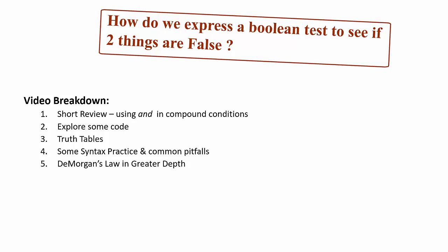Then we're going to explore ways to write code that provides a Boolean test for two things being false. You might be surprised by what code does work versus what doesn't work. Once we've run some experiments, we'll look at truth tables that explain why certain things work. After we understand the reasoning, we'll look at syntax practice and common pitfalls. Lastly, and optionally depending on your teacher, we're going to look at DeMorgan's Law, a logic rule related to truth tables — also typically taught in math classes when you start learning about logic.